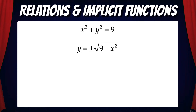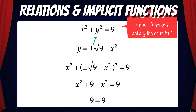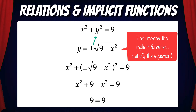Here you can see we've taken the relation x squared plus y squared equals 9 and substituted in the implicit functions y equals plus or minus the square root of 9 minus x squared. When we simplify the algebra, we get 9 equals 9. That means the implicit functions satisfy this equation.